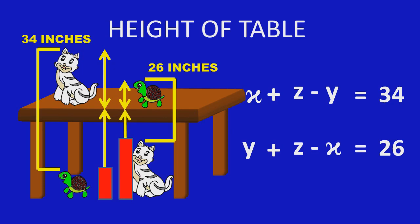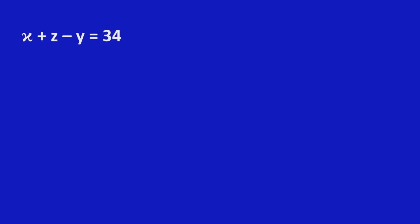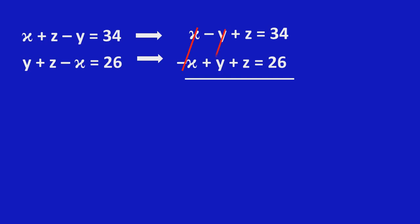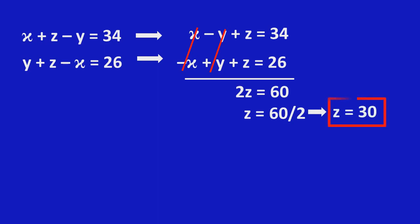Equation one: X minus Y plus Z equals 34. Equation two: minus X plus Y plus Z equals 26. Adding these two equations, X and minus X cancel out, minus Y and Y cancel out. Then 2Z equals 60, so Z equals 60 divided by 2, which gives Z equals 30. That is, the height of the Table is 30.